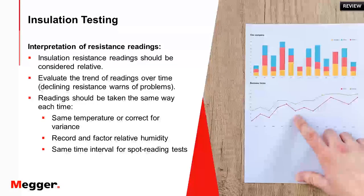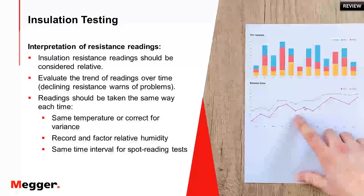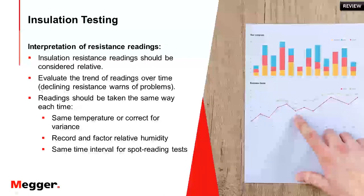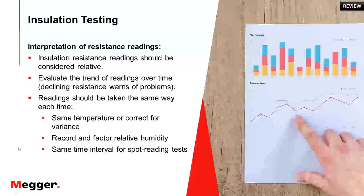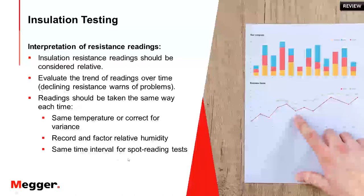For insulation testing interpretation, resistance readings should be considered relative. The best approach is to trend historical data: if something happened between tests, it will be obvious from the curve. Evaluate the trend of readings over time and you will be given warnings of problems. Readings should be taken the same way each time — same temperature (corrected to 20°C), record relative humidity, and use the same time interval for spot reading tests.